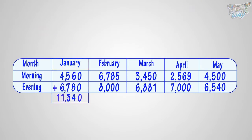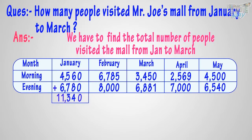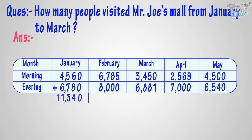Now let's answer another question. How many people visited Mr. Joe's mall from January to March? We have to find the total number of people who visited the mall from January to March. First, we will calculate the number of people who visited the mall in each month — January, February, and March — and then add them up. People visited the mall in January: we already calculated it in our previous question. It's 11,340 people.